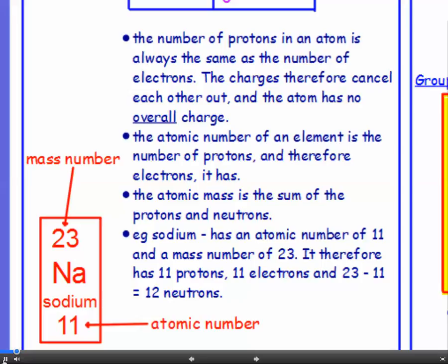The atomic number tells us the number of protons that an atom has. And because the protons and the electrons are always equal, then we also know that it has 11 electrons as well.